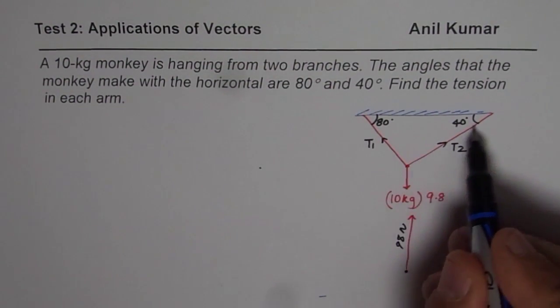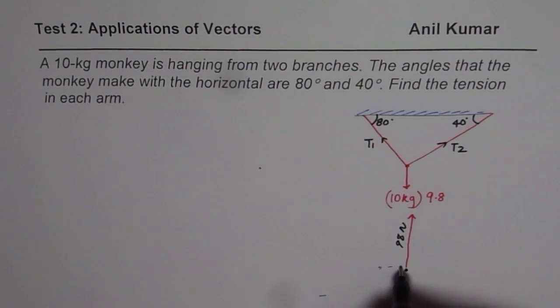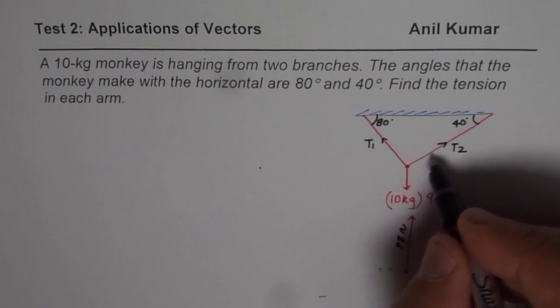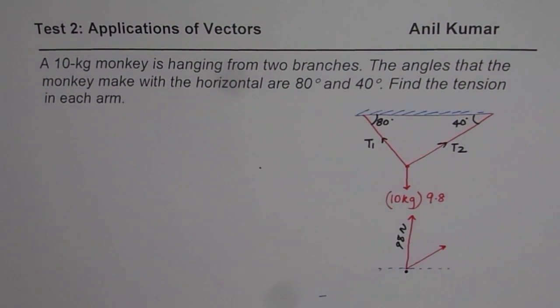Now we have a force tension on the right side from here. So let us say we will draw like this and represent this T2, a line parallel. So that is how the vector is. I am making slightly smaller now since I have smaller space here. So this is my tension T2.